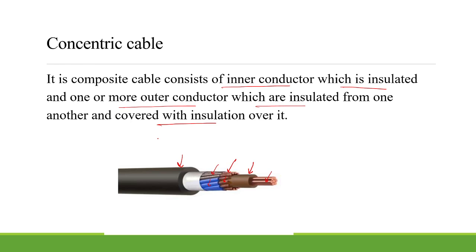Concentric cable consists of one center conductor with insulation around it. There are a number of conductors around the center and insulation is provided over each. Finally they are all covered with a final insulation layer.